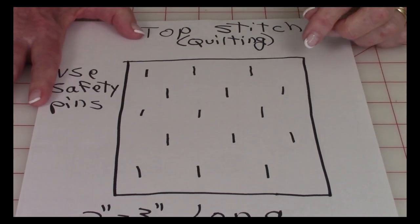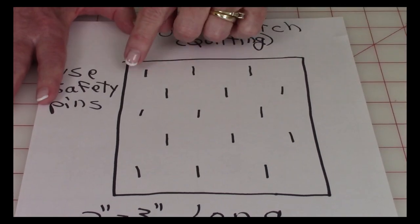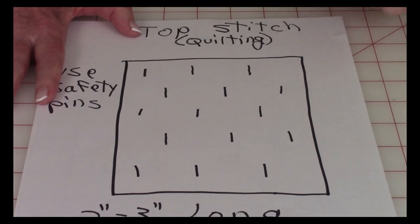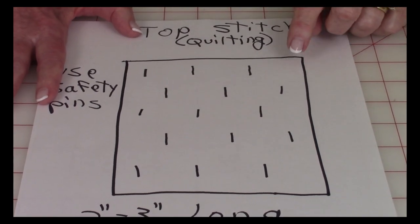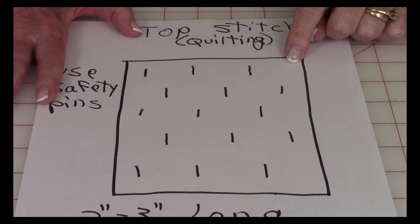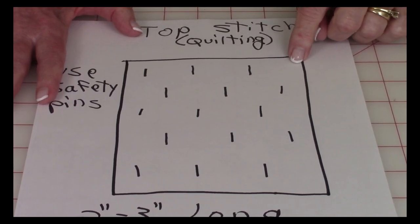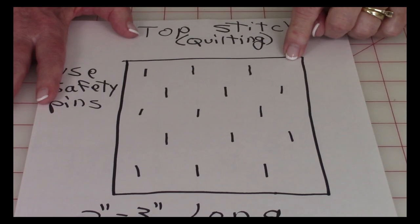So a couple of things you can do is in each corner, all four corners, stitch all the way through the fabric and do like a little tack stitch. Go around three, four times to hold it in place.